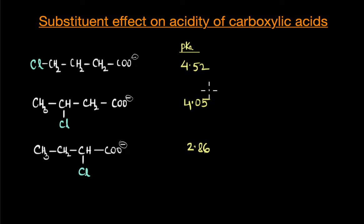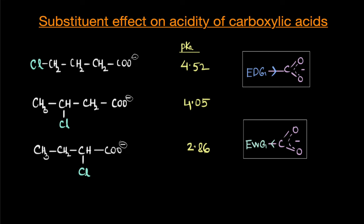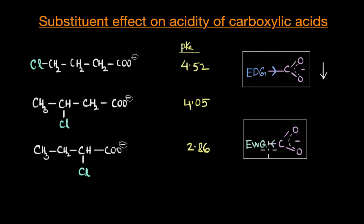To briefly summarize: an electron donating group destabilizes the carboxylate ion and thereby decreases the acidic character of carboxylic acids. On the contrary, an electron withdrawing group draws electron density away from the carboxylate ion, stabilizes the conjugate base, and results in an increase in the acidic character of the acid.